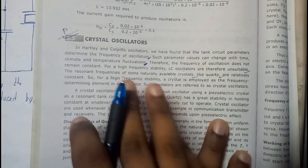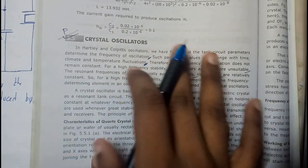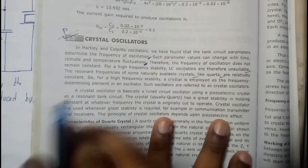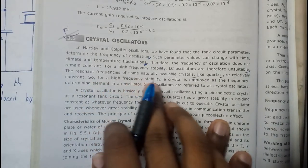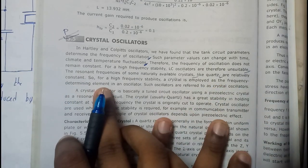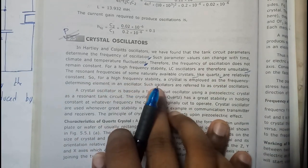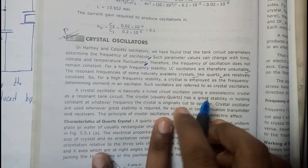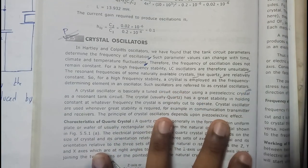Quartz crystals are relatively constant when compared with the LC type. For high frequency stability, a crystal is employed as a frequency determining element in an oscillator. Such oscillators are referred to as crystal oscillators.